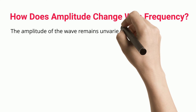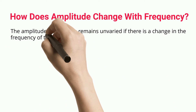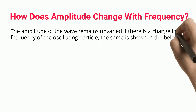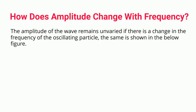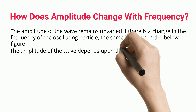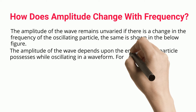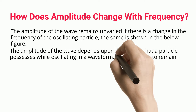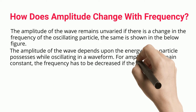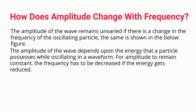The amplitude of the wave remains unvaried if there is a change in the frequency of the oscillating particle, as shown in the figure below. The amplitude of the wave depends upon the energy that a particle possesses while oscillating in a waveform. For amplitude to remain constant, the frequency has to be decreased if the energy gets reduced.